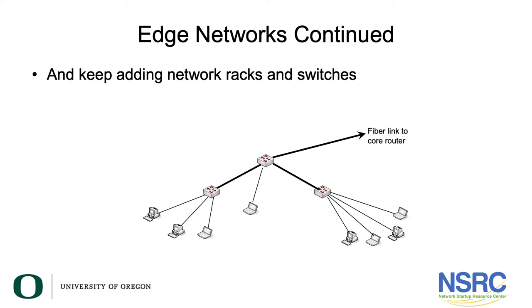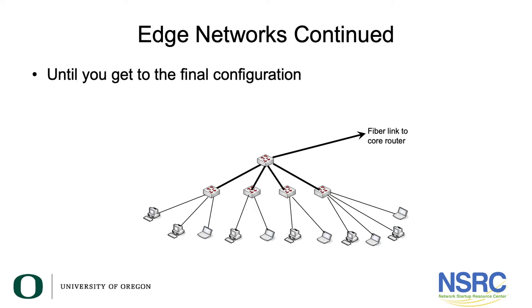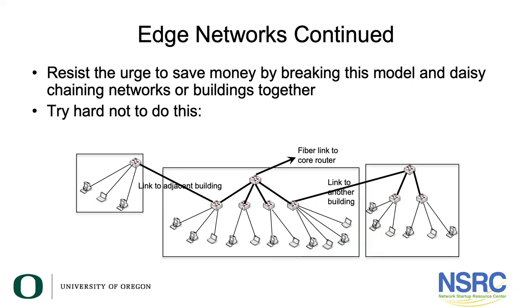And then we simply repeat that by adding additional network racks and switches in the hub-and-spoke final configuration that we originally showed. We want to encourage you to resist the urge to save money by breaking this model and daisy-chaining networks or buildings together. As you can see in this diagram, it was easiest from a network rack in the far wing of the building to serve an adjacent building by simply running a Cat6 cable out the window and to a switch in an adjacent building — we don't want you to do that.